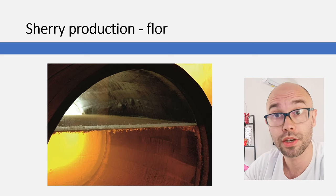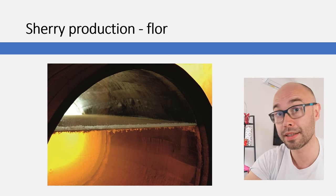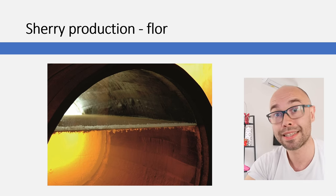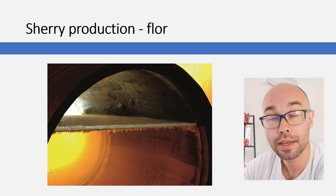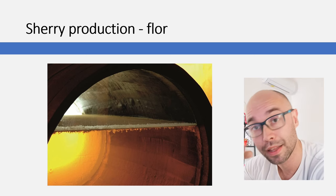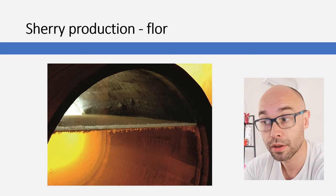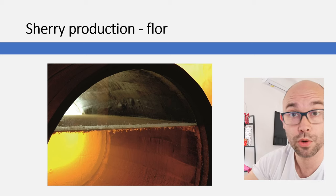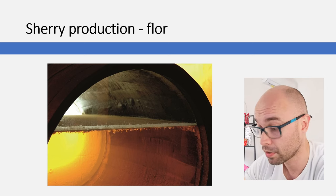The flor imparts a very specific biological flavor of dough and yeast. This is also called protective aging or biological aging. There are two types of aging in sherry: the fresh biological style under flor, and the oxidative style without flor — where the wine is exposed to oxygen, developing more oxidative aromas and a deeper, browner color. Also note that sherry barrels are not completely full, which allows flor to develop and enables oxidation for Oloroso.